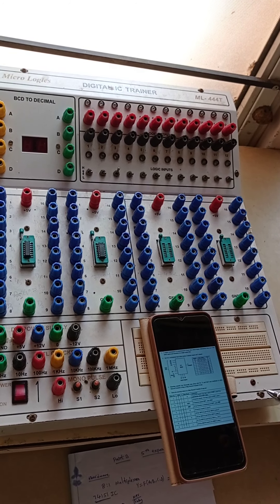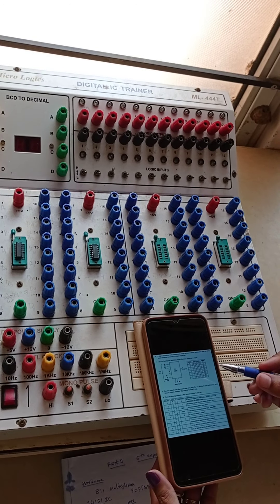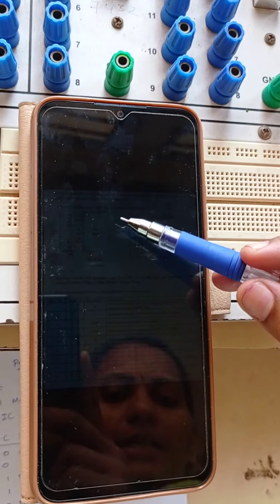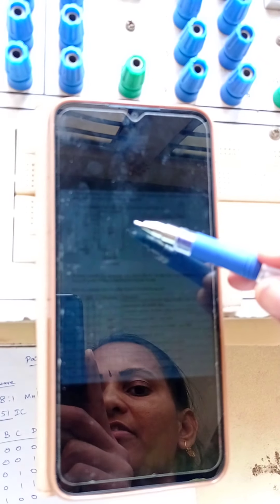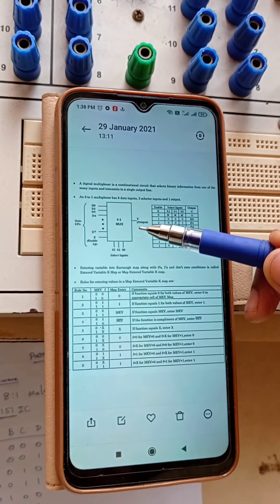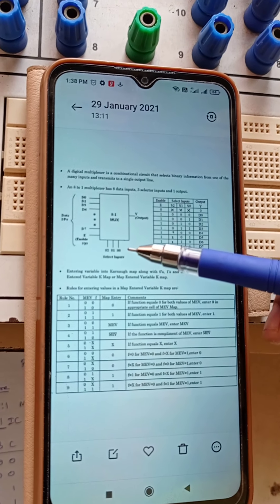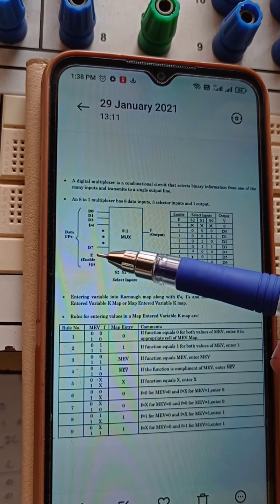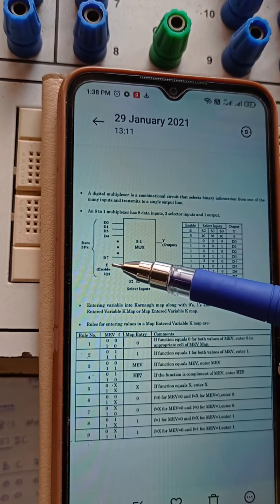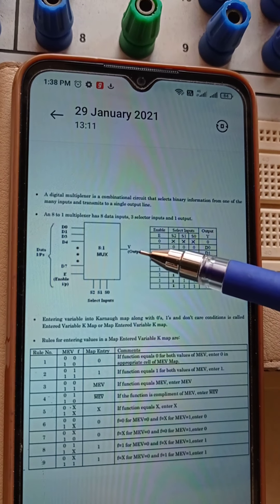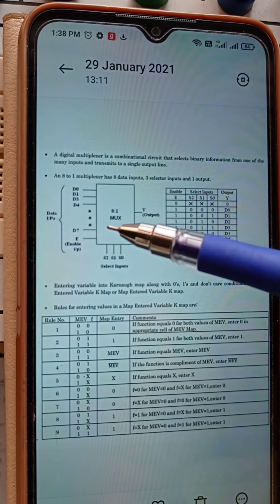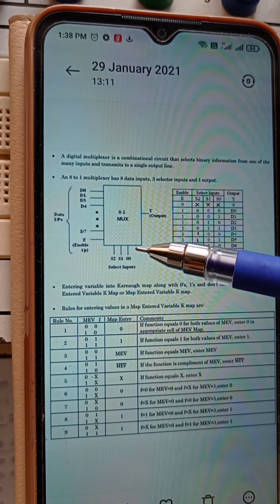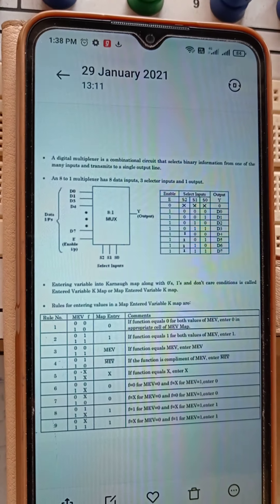For this designing we need multiplexer IC that is 74151 IC. This consists of 3 select lines, 0 to 7 that means 8 data lines, these are all data inputs, 1 output and 1 enable. For this we need NOT gate that is IC 7404.